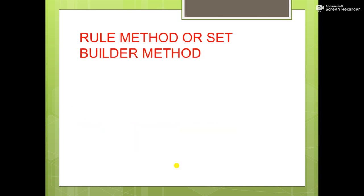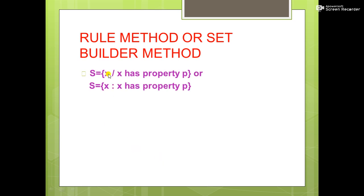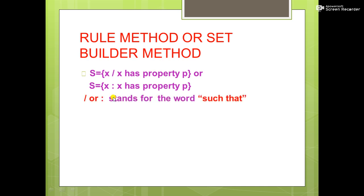Next is the rule method or set builder method. In this method, we write a variable, say x, representing any element of the set, followed by a vertical slash or colon — which is read as 'such that' — and then we write the property of that element. This is the general representation of the rule method or set builder method.